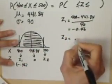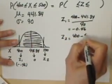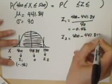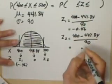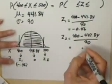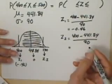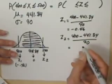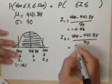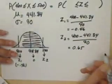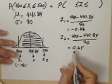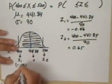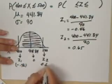Z2 is 500 minus 441.84 divided by 90. And that is 0.6462. But because I am using the Z distribution, I'm going to round it off to 0.65 because the Z table reports two decimals. Now, I'm going to put that one down, 0.65.